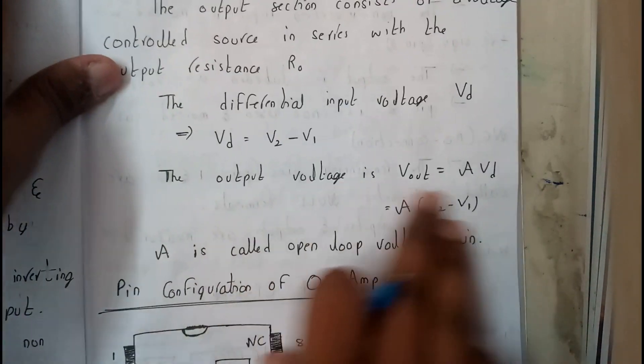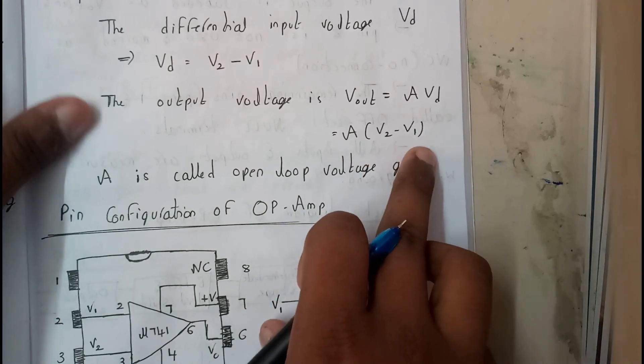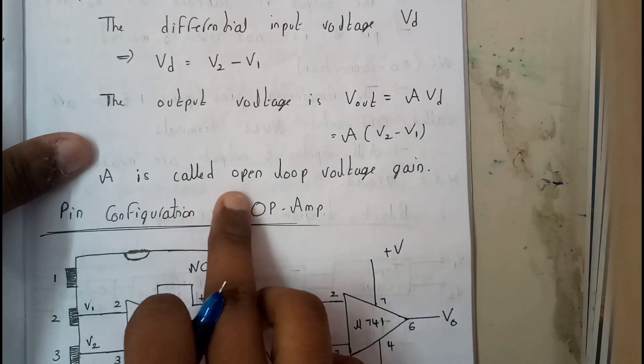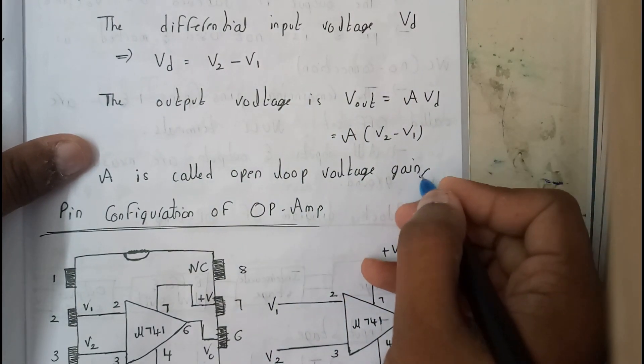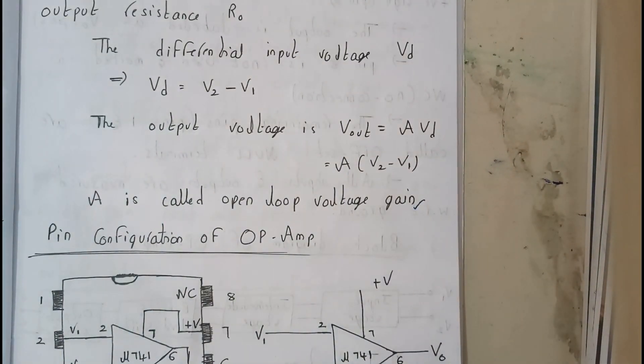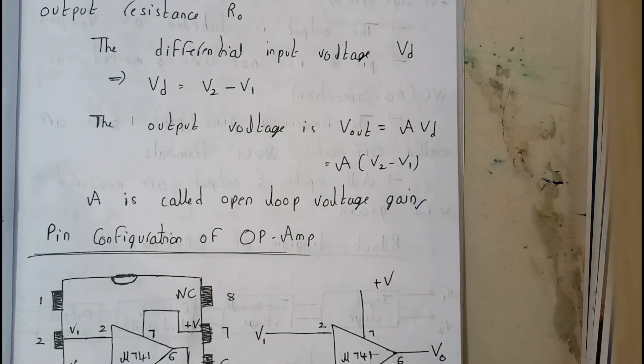A into V2 minus V1. Here A is the open loop voltage gain. This we have discussed in the previous chapter also in negative and positive feedback networks. So now I hope everyone is clear with the equivalent diagram.